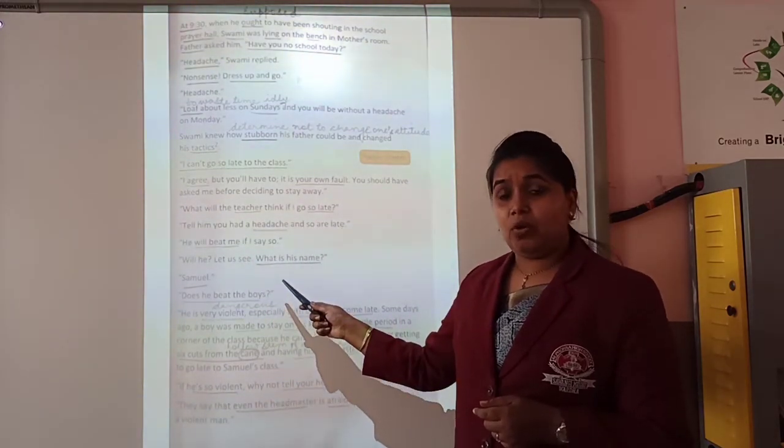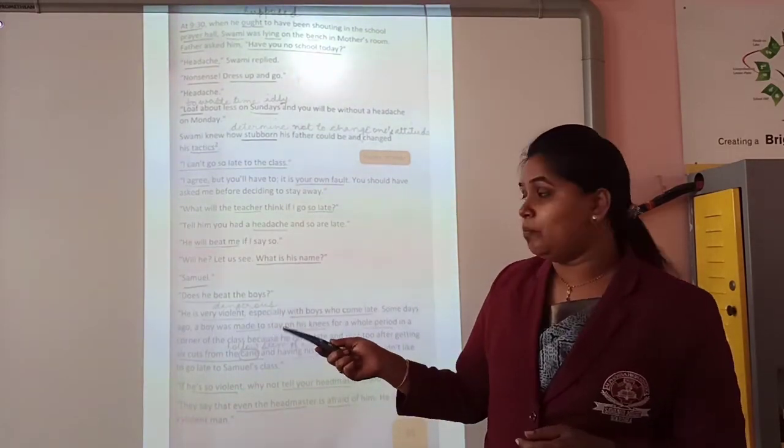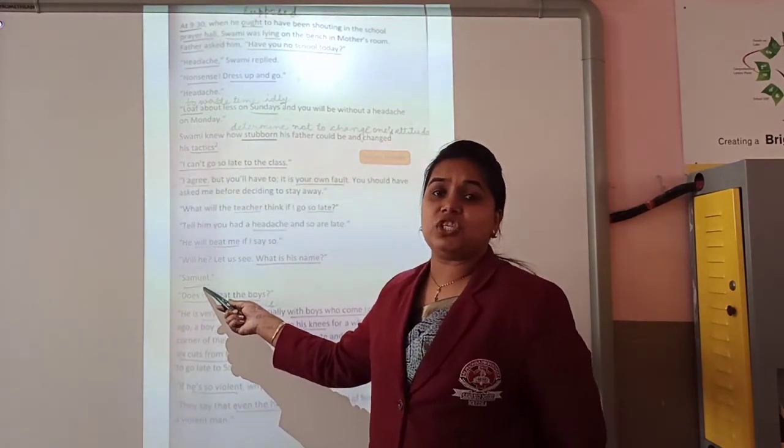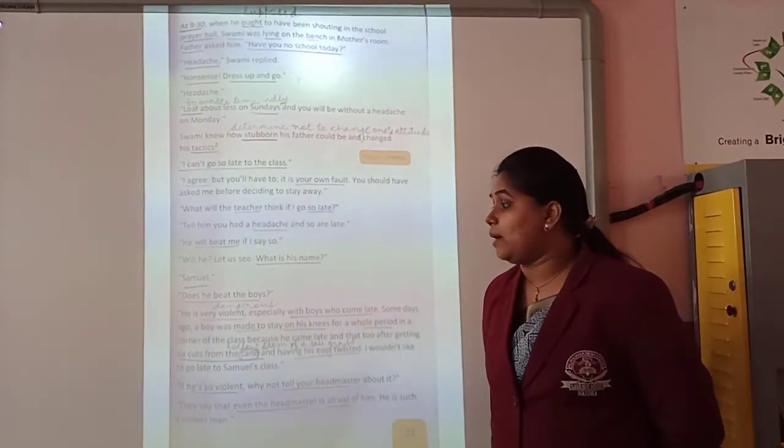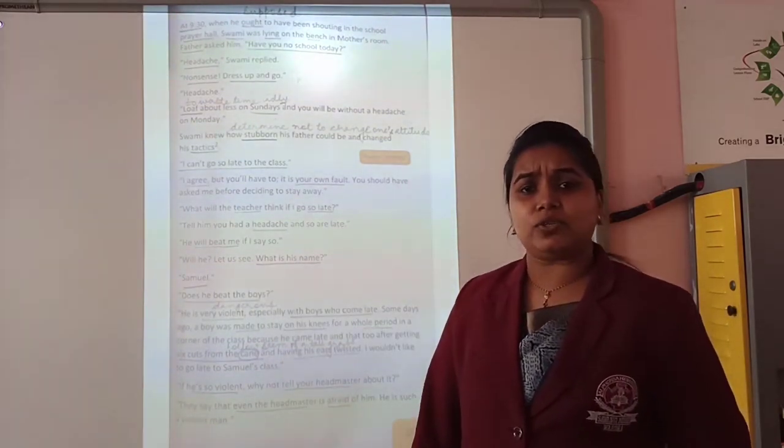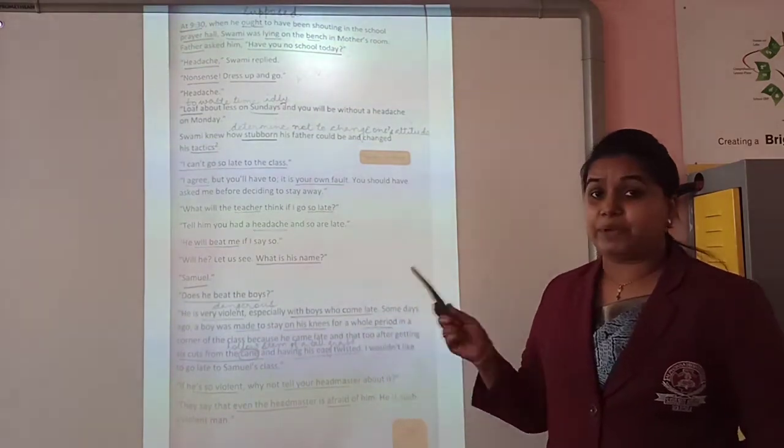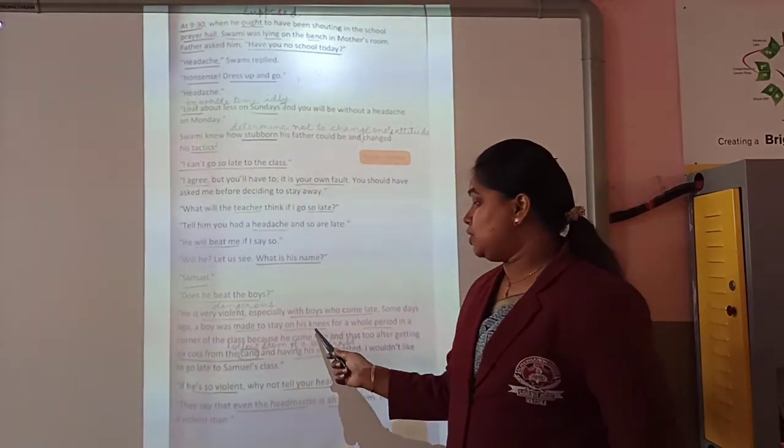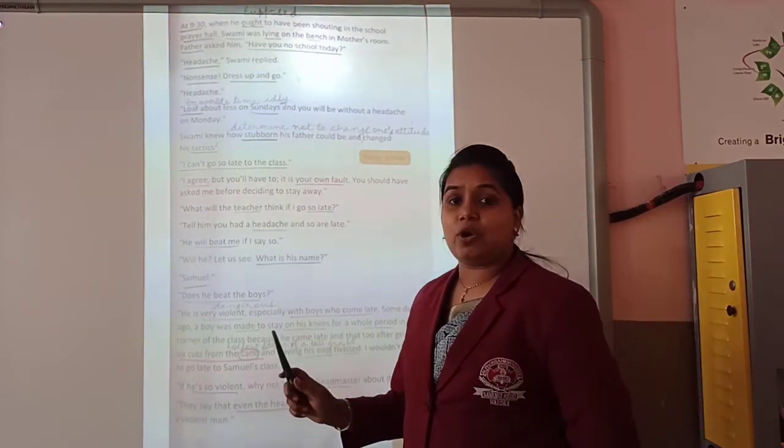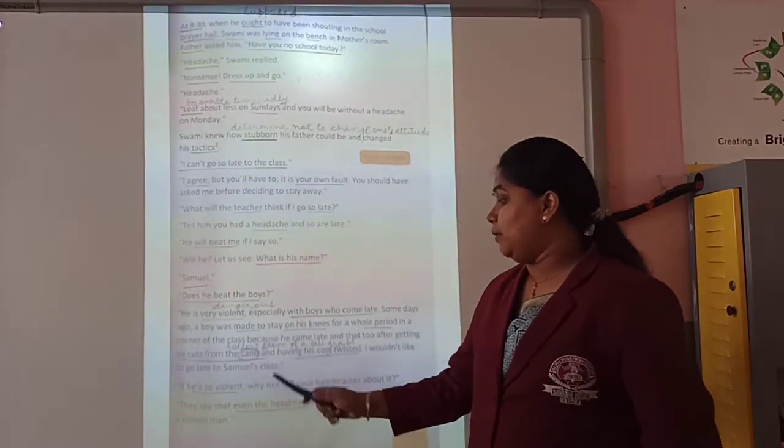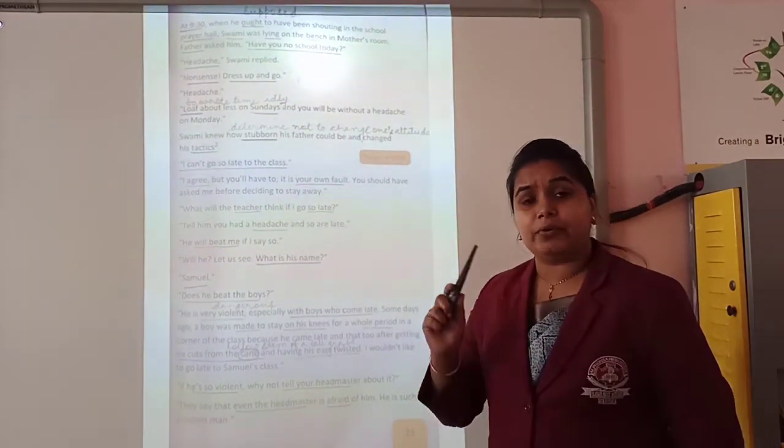If you go late to school, he is going to beat you. What is his name? Who is the teacher that is going to beat you if you go late? Swami takes the name of his teacher Samuel. His father is getting very curious to know more about teacher Samuel. Does he beat the boys regularly so much? Swami says he is very boiling - very boiling here means very dangerous - with the boys who come late. What does he make them do? Sit on their knees in the corner of the class for the whole period. And sometimes he also gets six cuts from the cane. Cane is a hollow stem of grass used to beat on the palm of the student - it was used earlier.